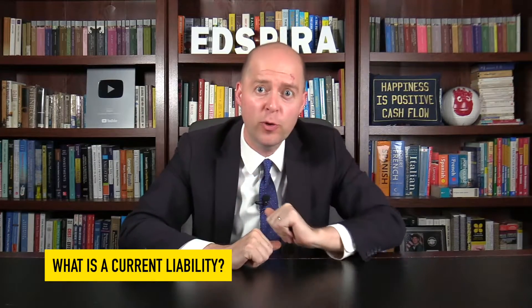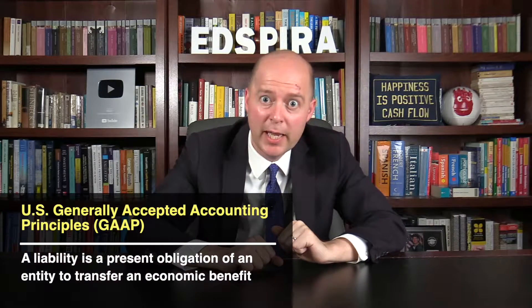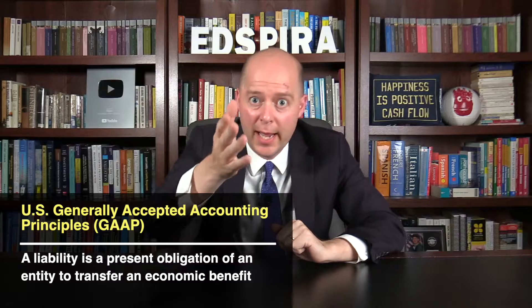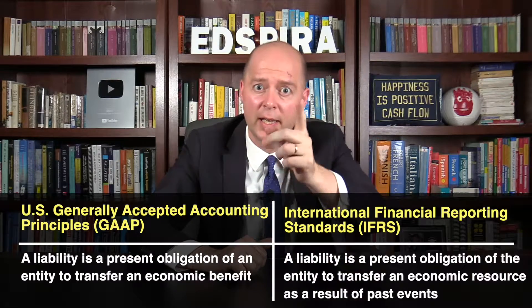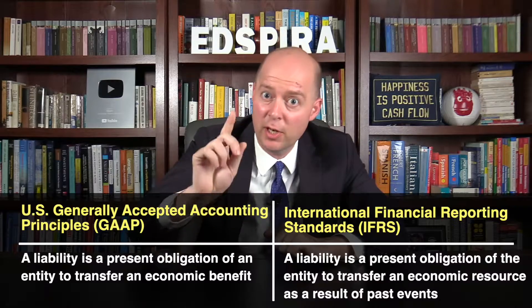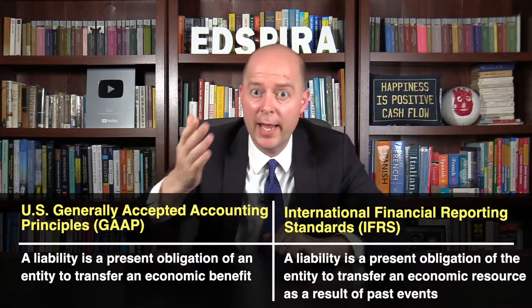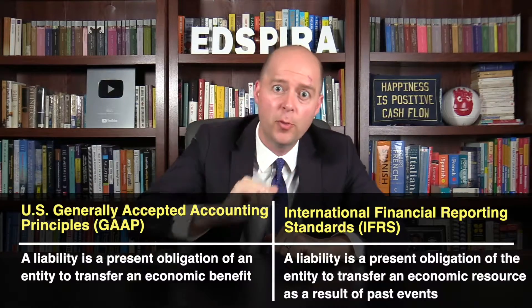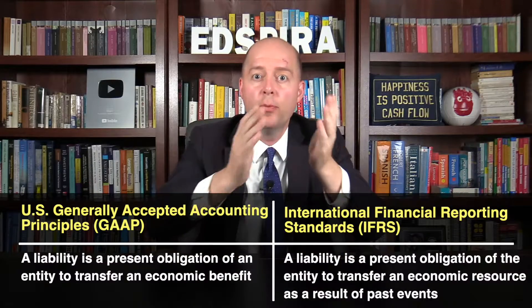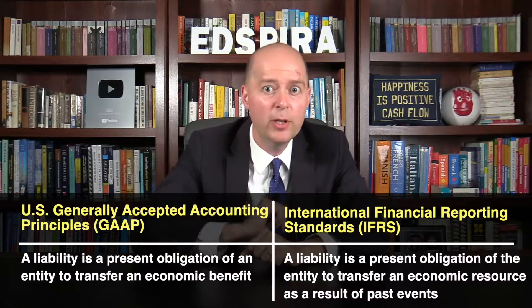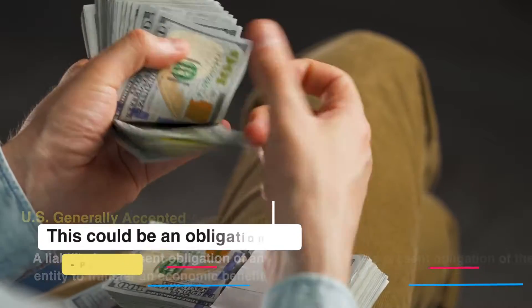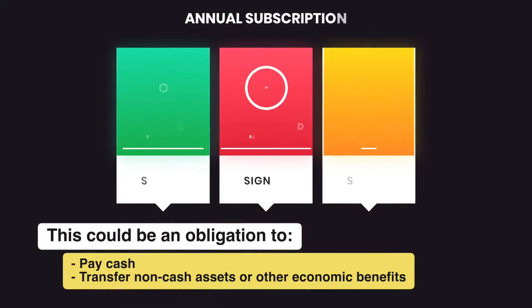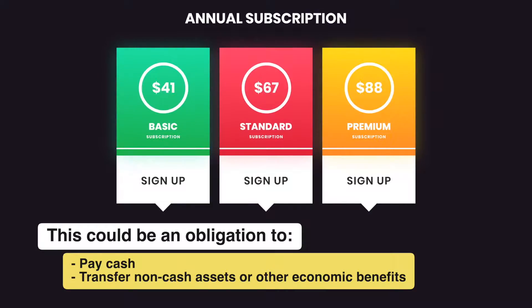Well, let's first recall what a liability is. Under US GAAP, a liability is a present obligation of an entity to transfer an economic benefit. IFRS is quite similar, defining a liability as a present obligation of the entity to transfer an economic resource as a result of past events. Thus, under both US GAAP and IFRS, a liability is an obligation to provide some benefit. This could be an obligation to pay cash, to transfer non-cash assets or provide other economic benefits.